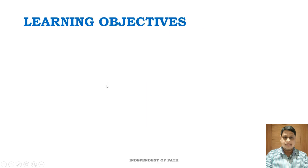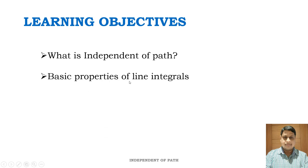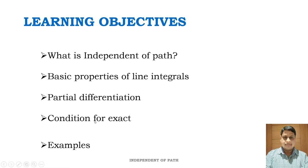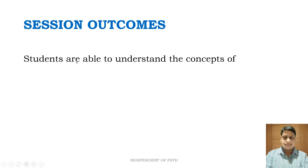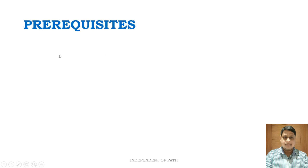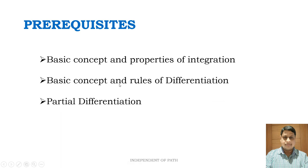The subtopic today is independent of path. Learning objectives: what is independent of path, basic properties of line integrals, partial differentiation, condition for exactness, and examples. Session outcomes: students are able to understand the concept and definition of independent of path. Prerequisites include basic concepts and rules of integration, differentiation, partial differentiation, and condition for exactness.